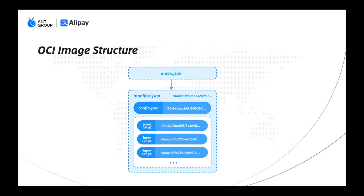This is the structure described by the OCI image spec. It starts with an index.json, which indexes one or more OS and architecture image manifests. The manifest references the container runtime configuration, and describes the runtime environment and the data for each layer of the image. OCI image layers are usually in TAR-GZ format, and these layers are the read-only layers of the container rootfs.